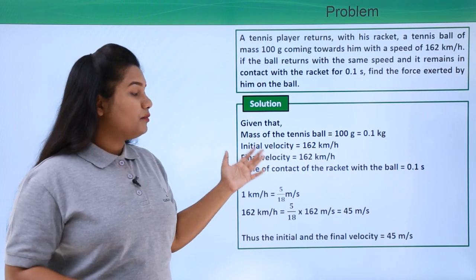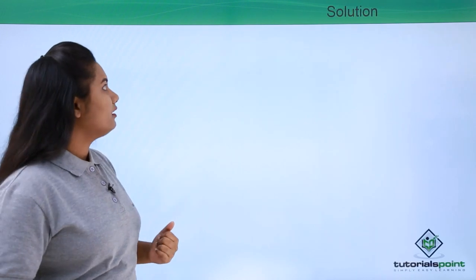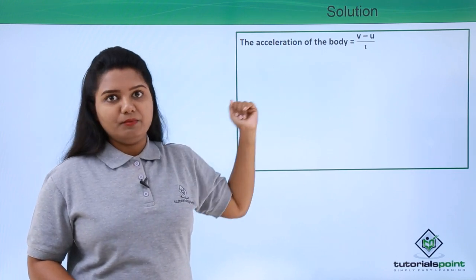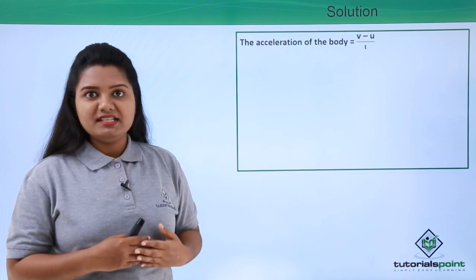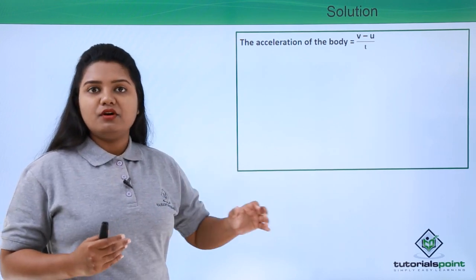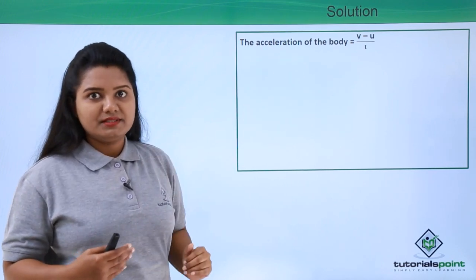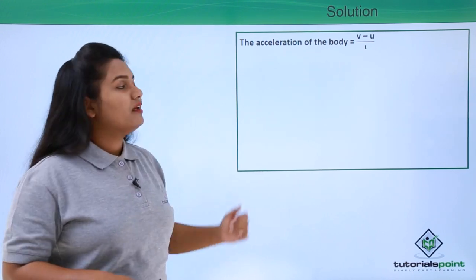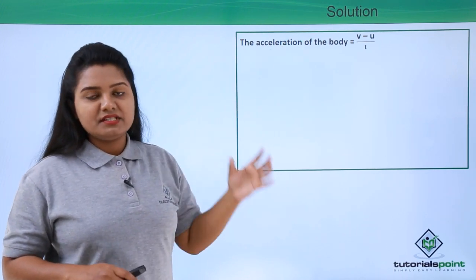Now let us move ahead and solve the problem since we have the values converted to SI units. The acceleration of the body is given by a = (V − U) / T. To find the force acting on the body we first need to find the acceleration, because force equals mass times acceleration. We already have the mass, and we find the acceleration from the final velocity, initial velocity, and time taken.